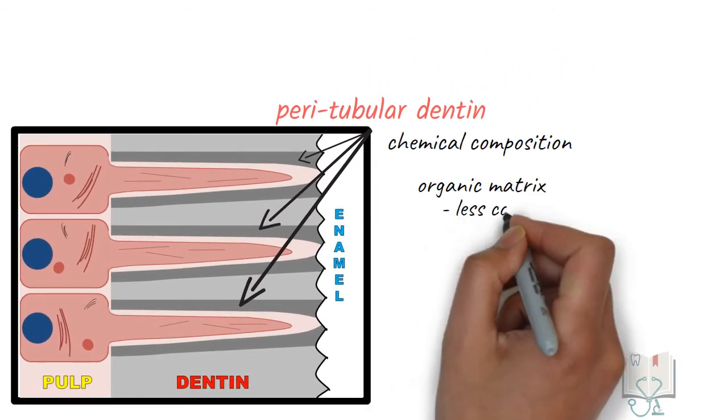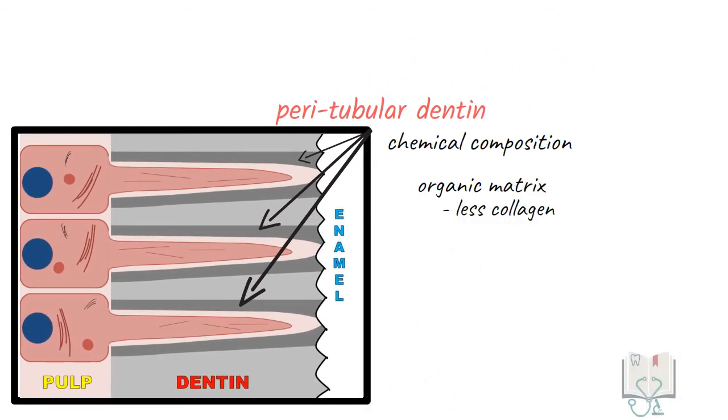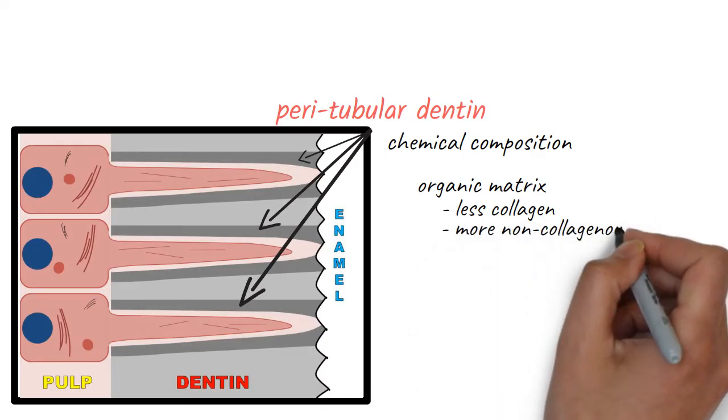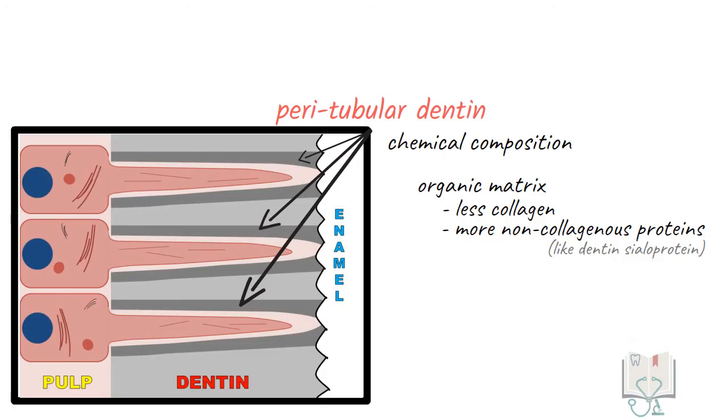Peritubular dentine has very less amount of collagen in its organic matrix but has abundant non-collagenous proteins. It is more mineralized than intratubular dentine.